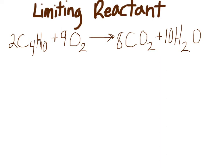This is oxygen, carbon dioxide and water. Let's say we had 50 grams of butane and 50 grams of oxygen. The question is which one is the limiting reactant, what is the theoretical yield, and which one is in excess?